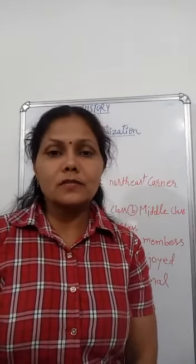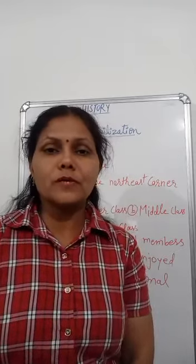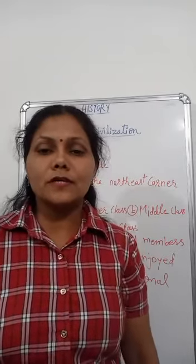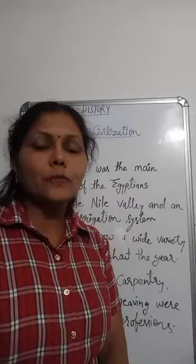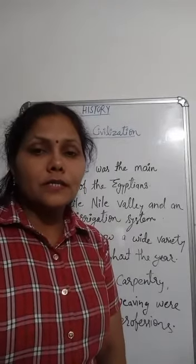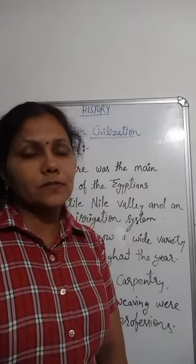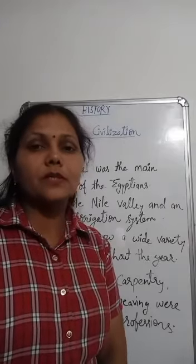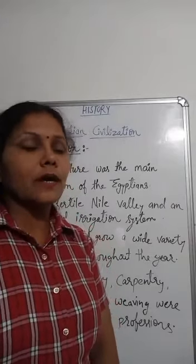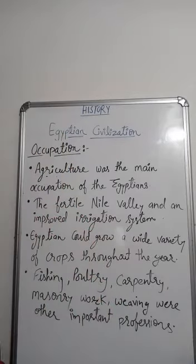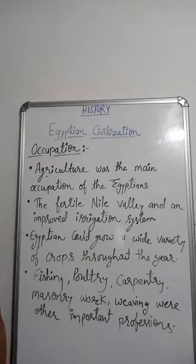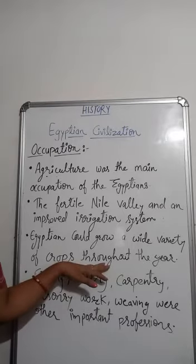Now, the occupation of Egyptian civilization. Agriculture was the most important occupation of Egyptians. The fertile Nile valley and improved irrigation system allowed Egyptians to grow a wide variety of crops throughout the year.